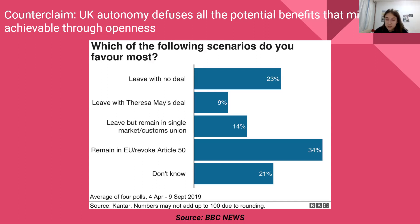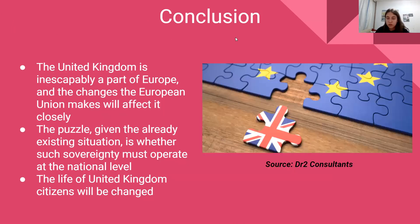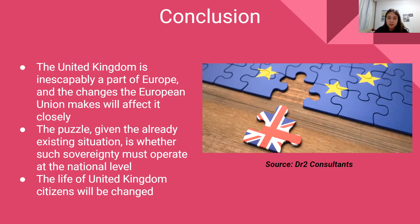The UK may take back control of immigration and restore sovereignty, but at times residents or Brits may experience some regrets. In conclusion, the United Kingdom is inescapably a part of Europe, and changes the European Union makes will still affect the UK whether it stays or not — which it is not. The puzzle, given the already existing situation, is whether such sovereignty must operate at the national level, and that the life of United Kingdom citizens will be changed. Thank you.